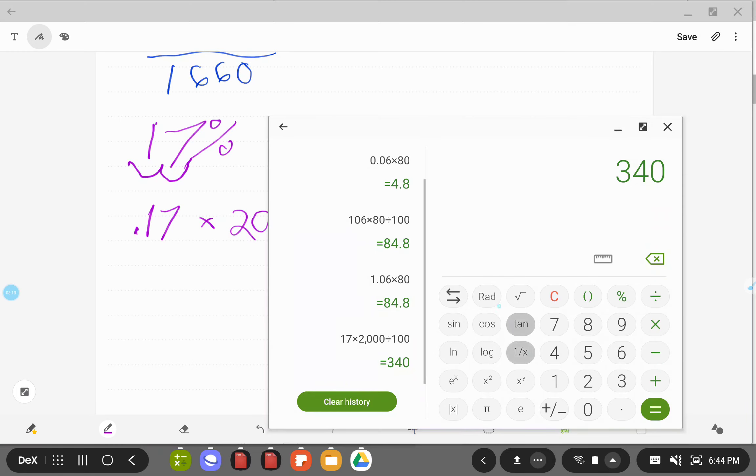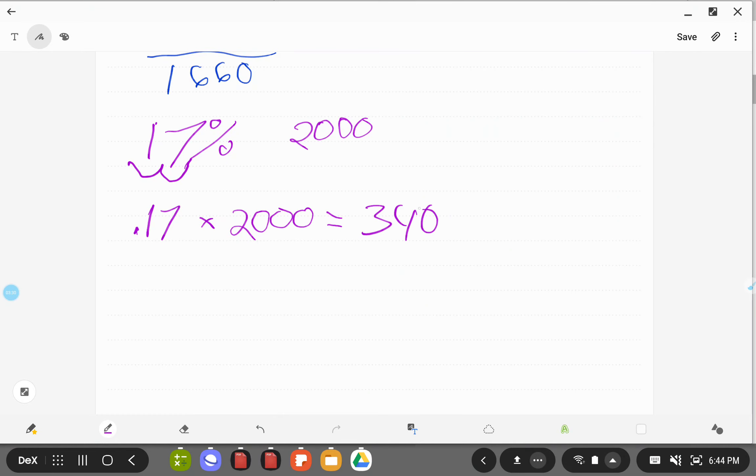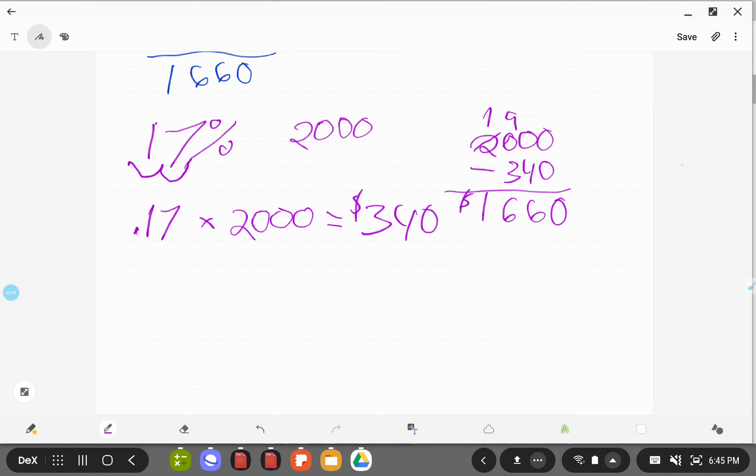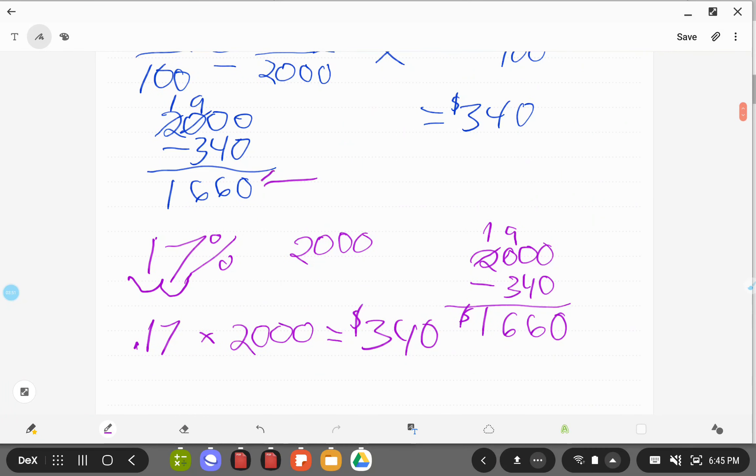So that would give us 0.17 times 2000, 340, just like before, which means $340. And then to figure out how much you're taking home, once again, you do 2000 subtract 340. We have to borrow some stuff, that becomes a 9, that becomes a 1. $1,660, same as before.